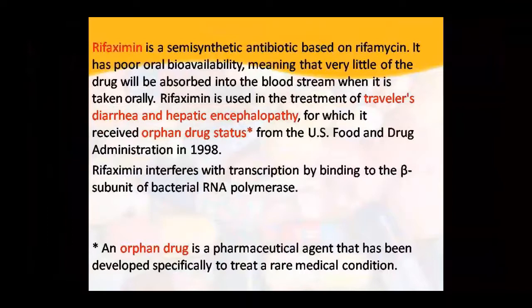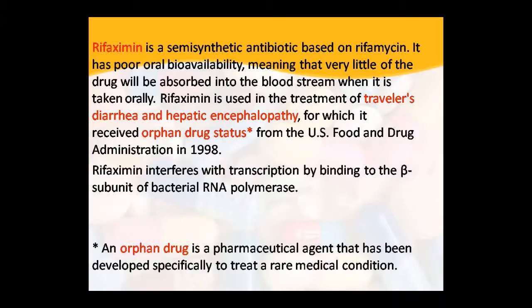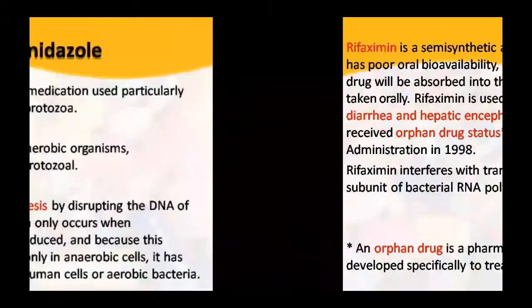Next is rifaximin — a semi-synthetic antibiotic based on rifamycin. Its oral bioavailability is very low. It is used for traveler's diarrhea and hepatic encephalopathy. It has orphan drug status and was approved by the US FDA in 1998. Rifaximin interferes with the transcription process because RNA polymerase is inhibited. An orphan drug is a pharmaceutical agent made specifically for a rare medical condition and is not commonly used.